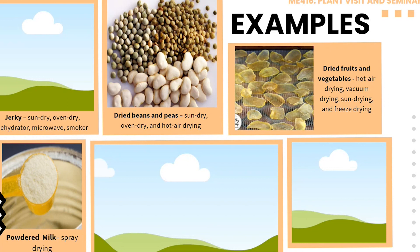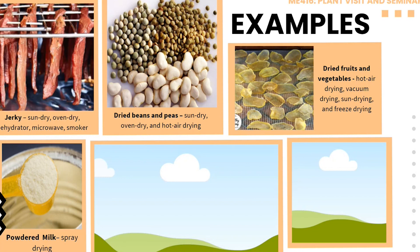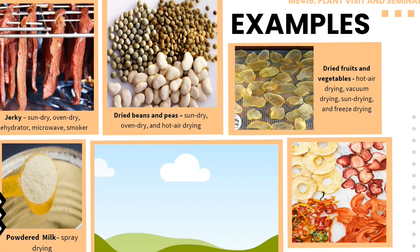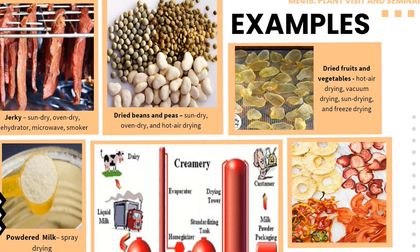Dried fruits and vegetables include potato chips, which go through hot air drying — vacuum drying, sun drying, and freeze drying are also possible methods. Another example is powdered milk: milk is naturally a liquid obtained from cows or goats, and it goes through spray drying — the atomization of a solution, slurry, or emulsion. The liquid form of milk is sprayed into an evaporator with hot air passing through, and the end product is powdered milk. Spraying the milk scatters the molecules, allowing the moisture content to evaporate more quickly.